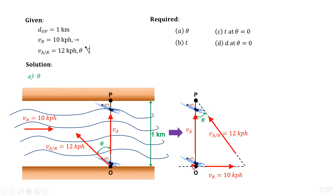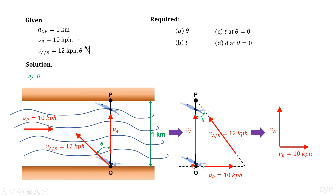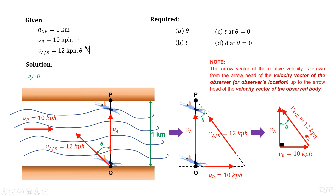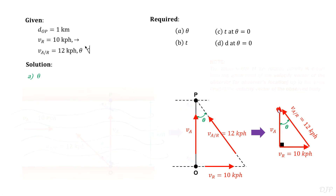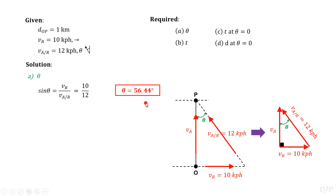However, the triangles formed by velocity and its corresponding displacement vectors are similar triangles. To further simplify this drawing, we can connect the tails of the absolute velocities and then draw the given relative velocity. Always make sure that the arrow vector of the relative velocity is drawn from the arrowhead of the velocity vector of the observer up to the arrowhead of the velocity vector of the observed body. From this drawing, we can now compute the value of theta using the sine function. By substitution, we get that theta is equal to 56.44 degrees.